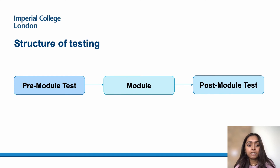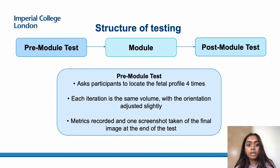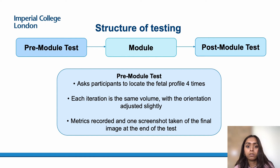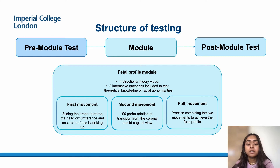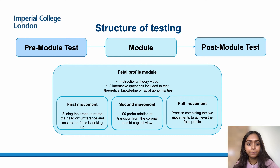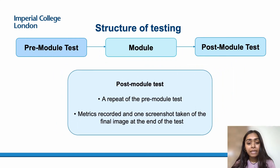This is the structure of our testing. Users first completed a pre-test comprising three exercises, plus a repeat of one exercise to obtain a screenshot for objective marking. Participants then completed our module, which was split into two parts to break down movements into easier segments to practice, with a third part combining both movements to obtain the desired image. Interspersed within this were three questions testing theoretical knowledge of abnormalities. Following the module there was a repeat post-test, allowing direct comparison. The total time to complete the module, pre-test and post-test was one hour.